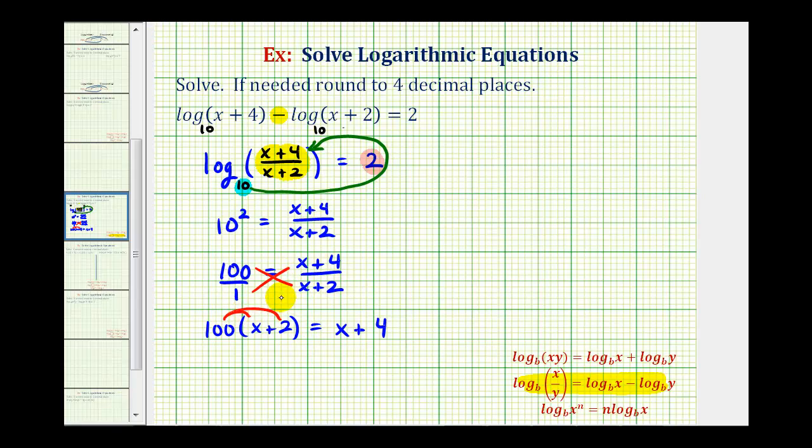Now we'll distribute and solve for x. So we have 100x plus 200 equals x plus four.